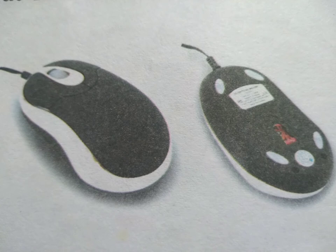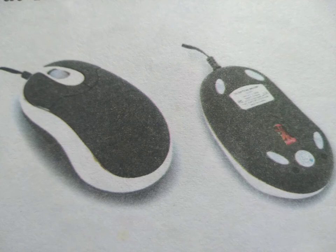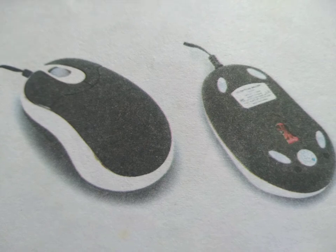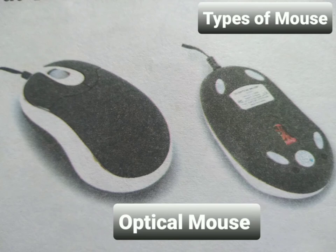Next is optical mouse. An optical mouse does not have a ball — you can see there is no ball. It uses a laser for detecting the movement of the mouse. Laser means a beam of light.